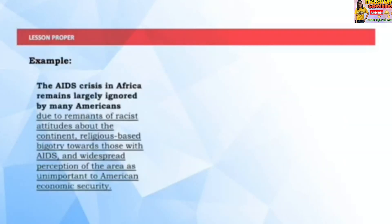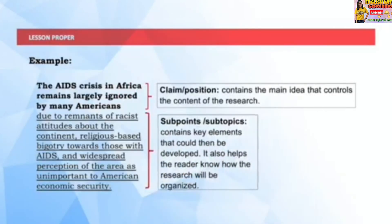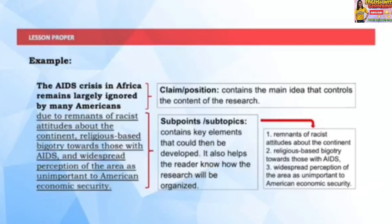Example: 'The AIDS crisis in Africa remains largely ignored by many Americans due to remnants of racist attitudes about the continent, religious-based bigotry towards those with AIDS, and widespread perception of the area as unimportant to American economic security.' The claim or position contains the main idea that controls the content of the research. Sub-points or sub-topics contain key elements that could then be developed, and they help the reader know how the research will be organized. The sub-points presented are: (1) remnants of racist attitudes about the continent, (2) religious-based bigotry towards those with AIDS, and (3) widespread perception of the area as unimportant to American economic security.